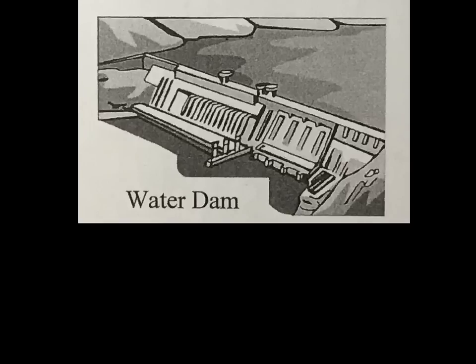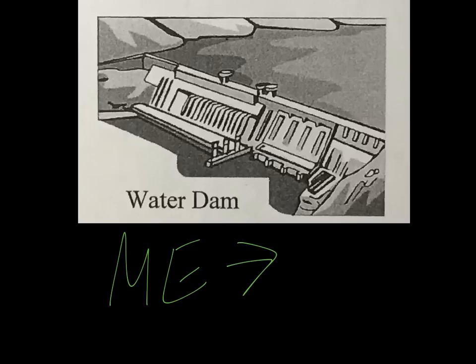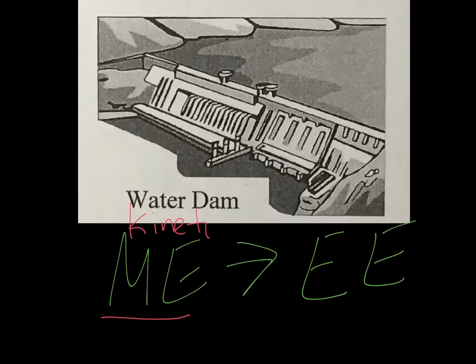Let's look at this water dam. A water dam is similar to a wind turbine in that it generates electricity. The water is moving through it, just like blades move in a wind turbine, and we get our electricity from that. If it's moving, what kind of energy do we have? Exactly — mechanical energy. Once the water moves through the dam, it produces electrical energy. And just to remind you: mechanical energy is the energy of movement, similar to kinetic energy.